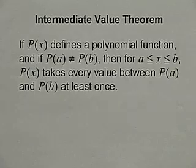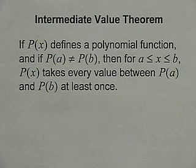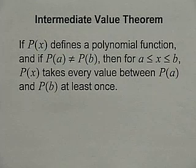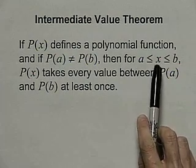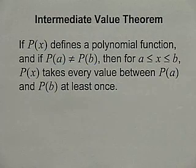This theorem says if p of x defines a polynomial function and if p of a does not equal p of b, then for a less than or equal to x less than or equal to b — or you could think of this as x between a and b — p of x takes every value between p of a and p of b at least once. A picture will help illustrate this.